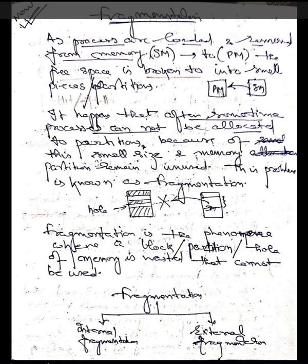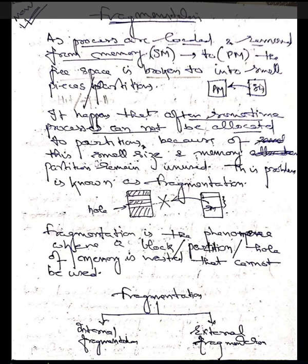What happens if you again return the same process or data from primary memory back to secondary memory? It may or may not accommodate that particular size of data into secondary memory. Memory management structures need to account for how blocks, once moved from secondary to primary or primary to secondary, are allocated in the appropriate space so they can be retrieved and processed by the CPU as needed.